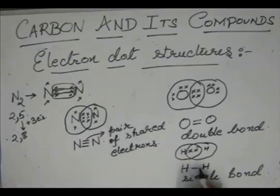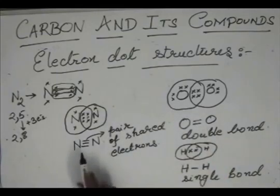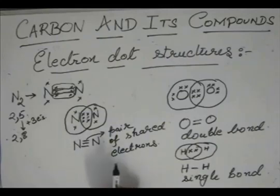Each bond over here refers to a pair of shared electrons. So this has 1 pair of shared electrons, this has 2 pairs of shared electrons, and this has 3 pairs of shared electrons.